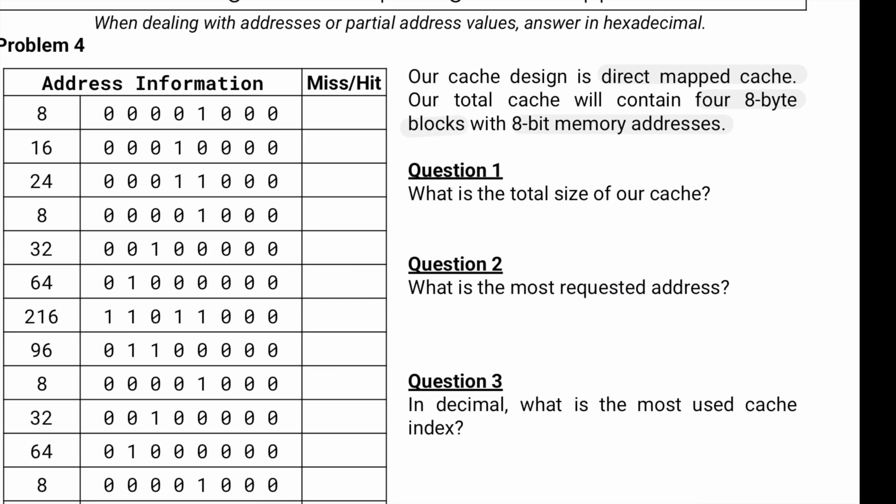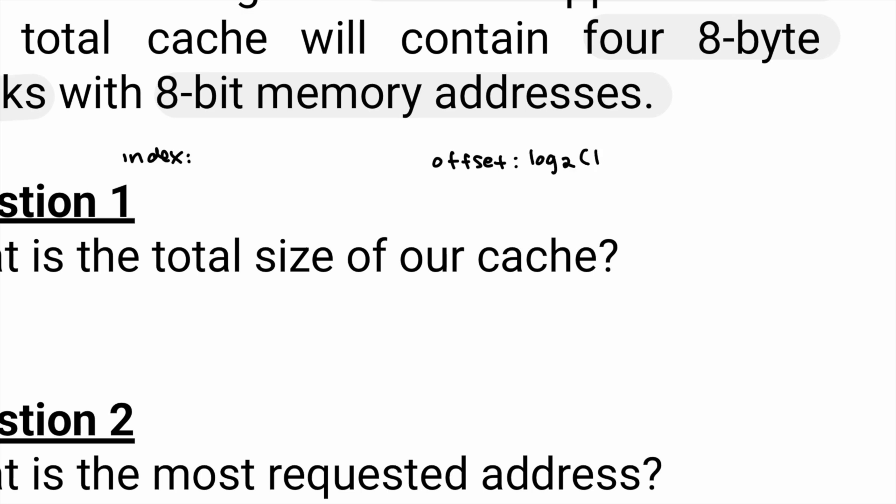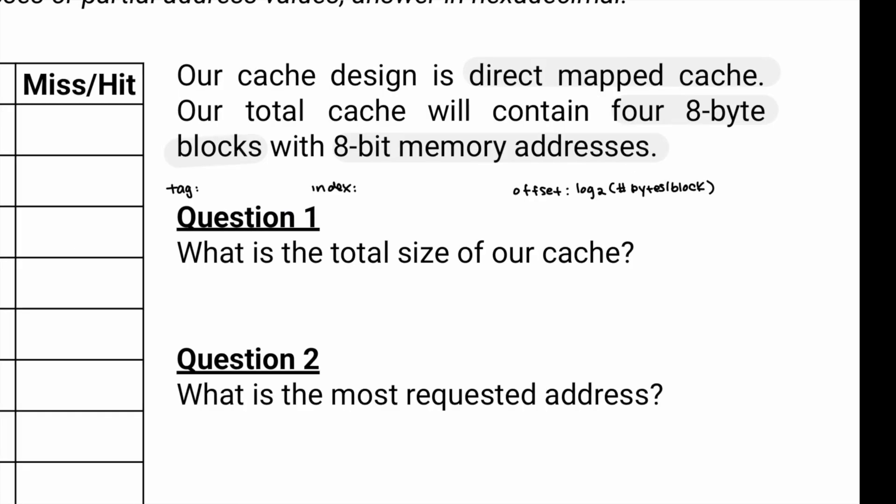Okay, first let's calculate our tag, index, and offset. We know offset is log2 number of bytes per block. This will be given right here for 8-byte blocks. So log2 of 8 equals 3.